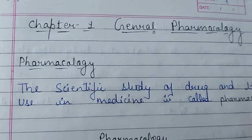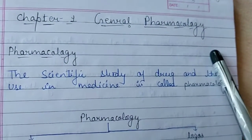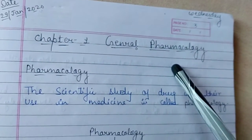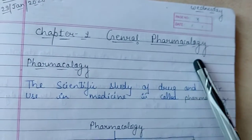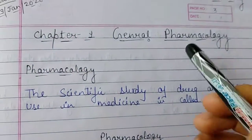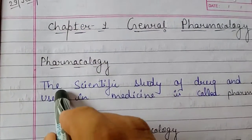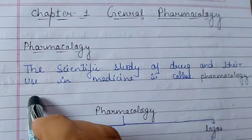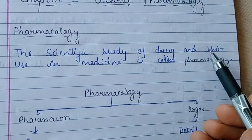Hello everyone, today we will discuss general pharmacology. In this topic we have covered the definition, general study, scope, and historical landmarks. Pharmacology may be defined as the scientific study of a drug and their use in medicine.